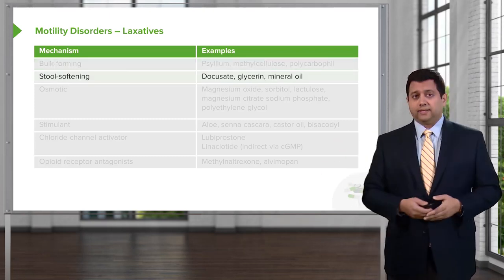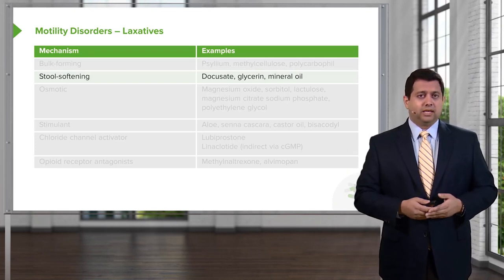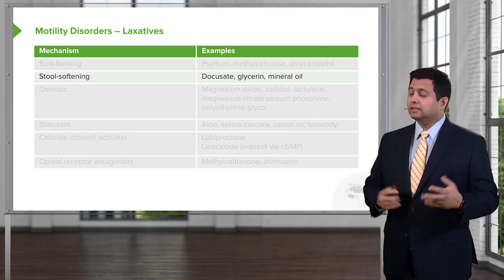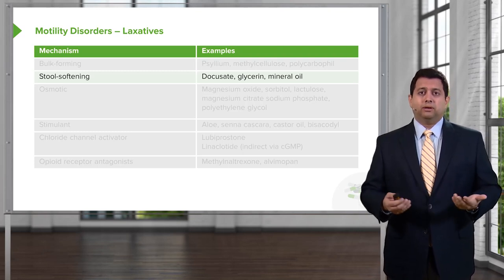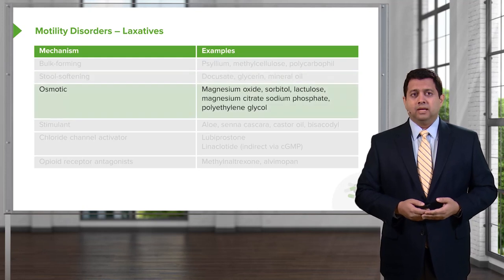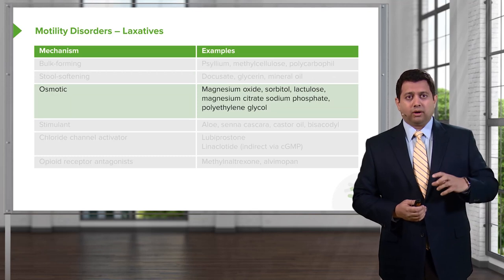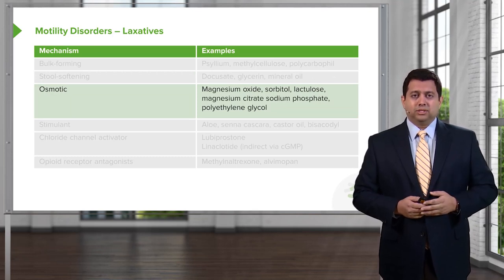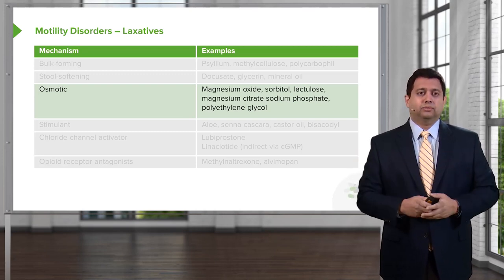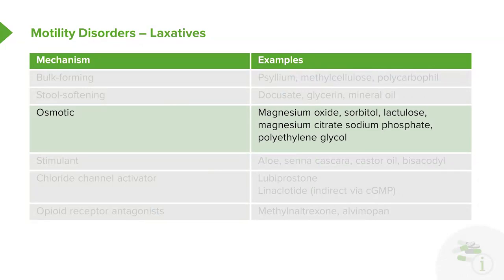There are stool-softening agents. Docusate sodium is very commonly used — I use it in probably 60% of my patients over the age of 80. Glycerin tablets, glycerin suppositories, and mineral oil are also ways of softening stool. Osmotic cathartics work by causing more water to be retained in the stool, creating a gel matrix so that the stool remains softer. Magnesium oxide and similar agents are examples of this.